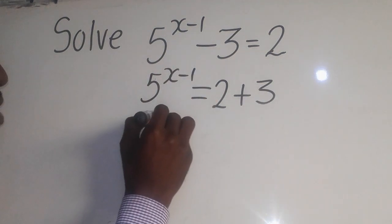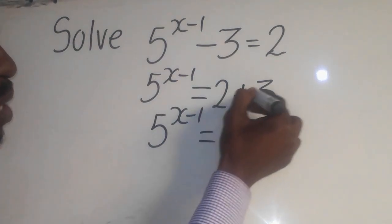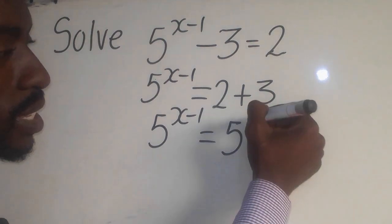Now it is the same one, this one has to come down. It is 5 to the power x minus 1 equal to, so 2 plus 3, it is what? It is 5 there. You have seen.